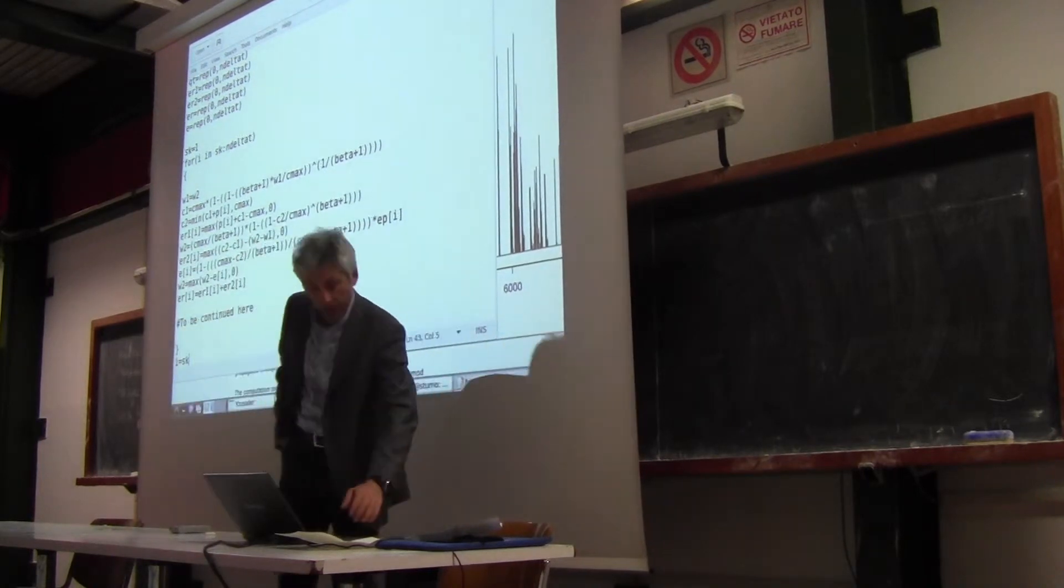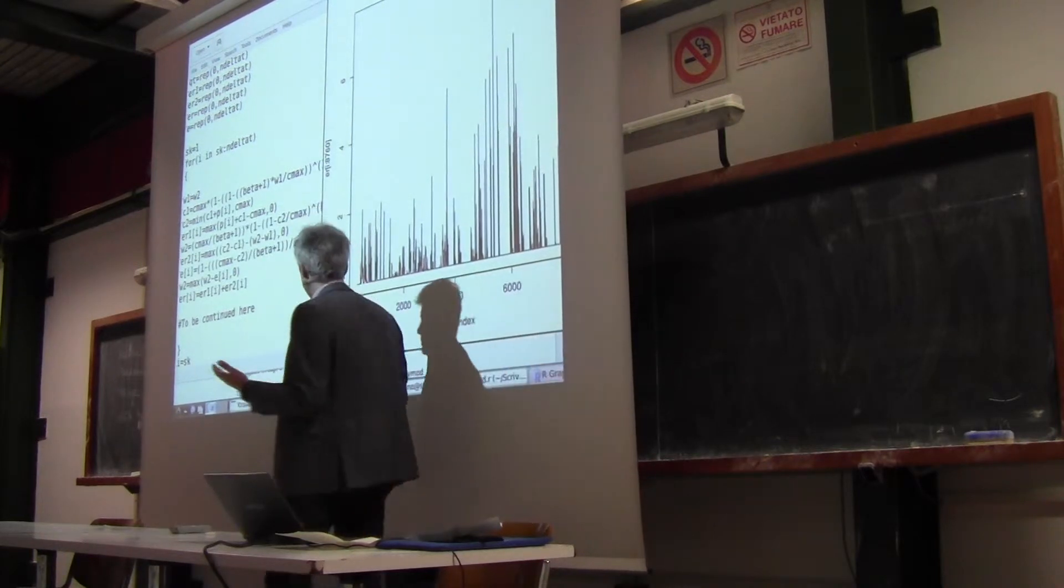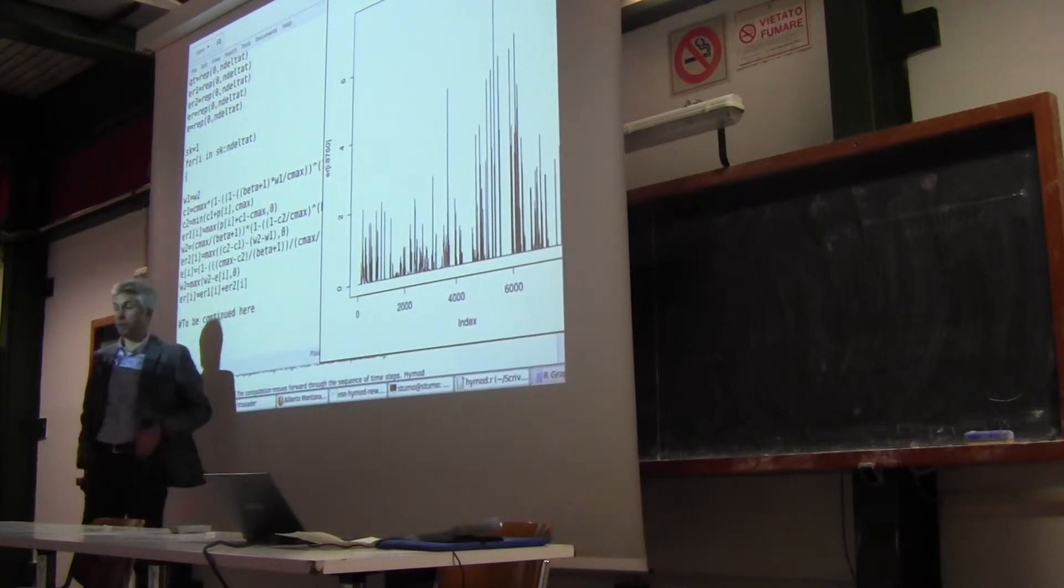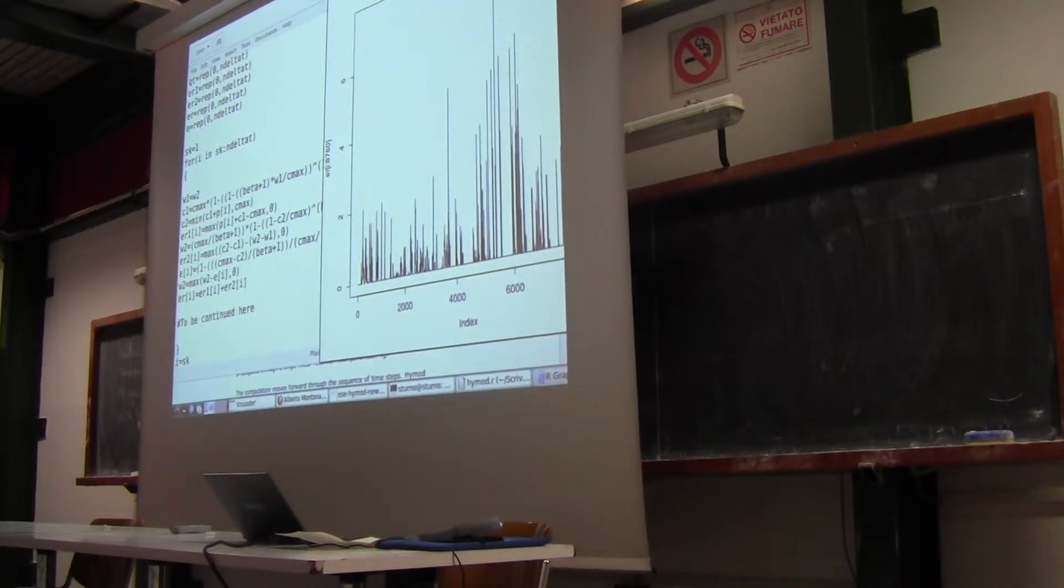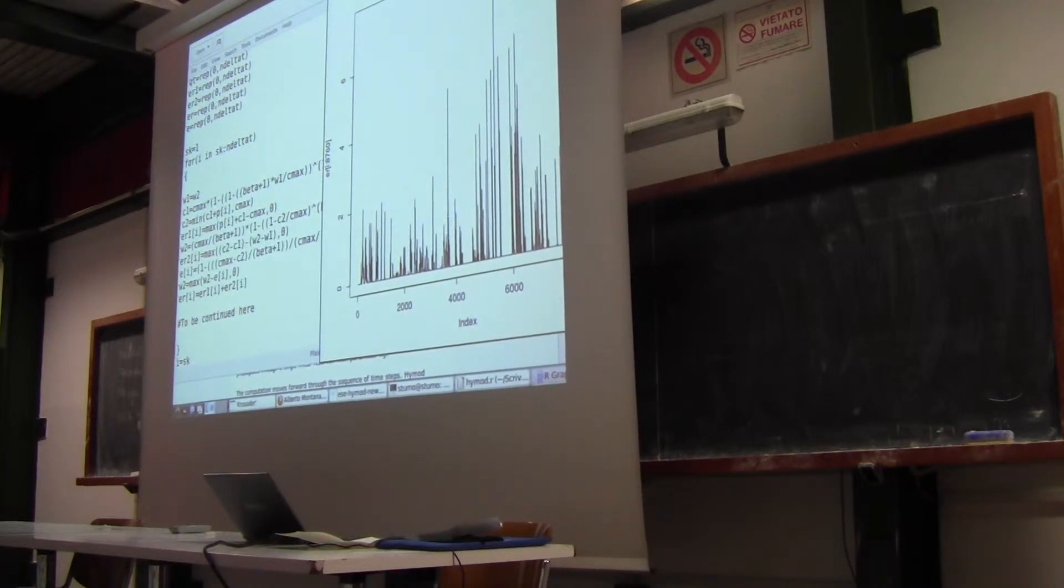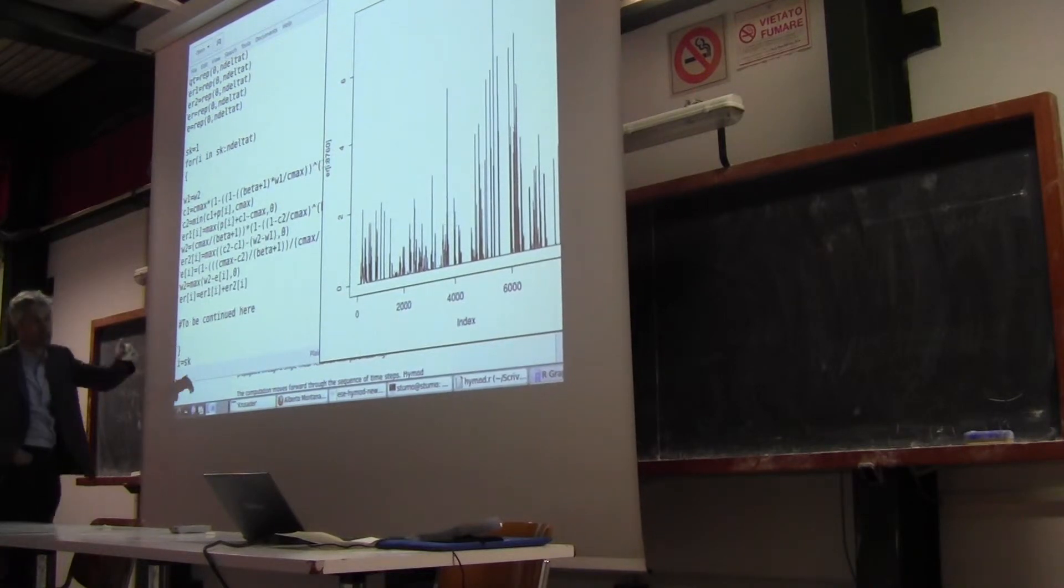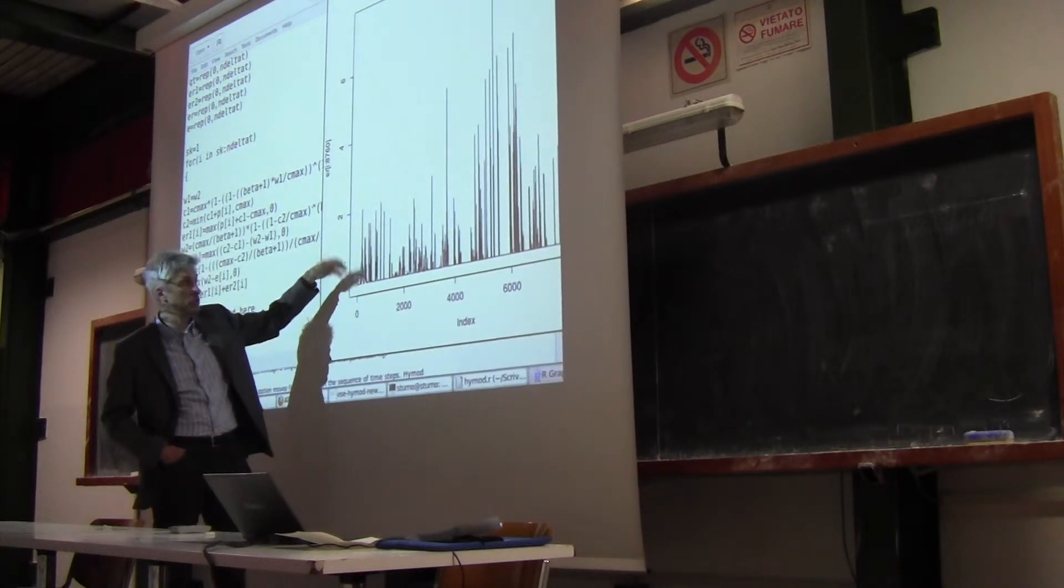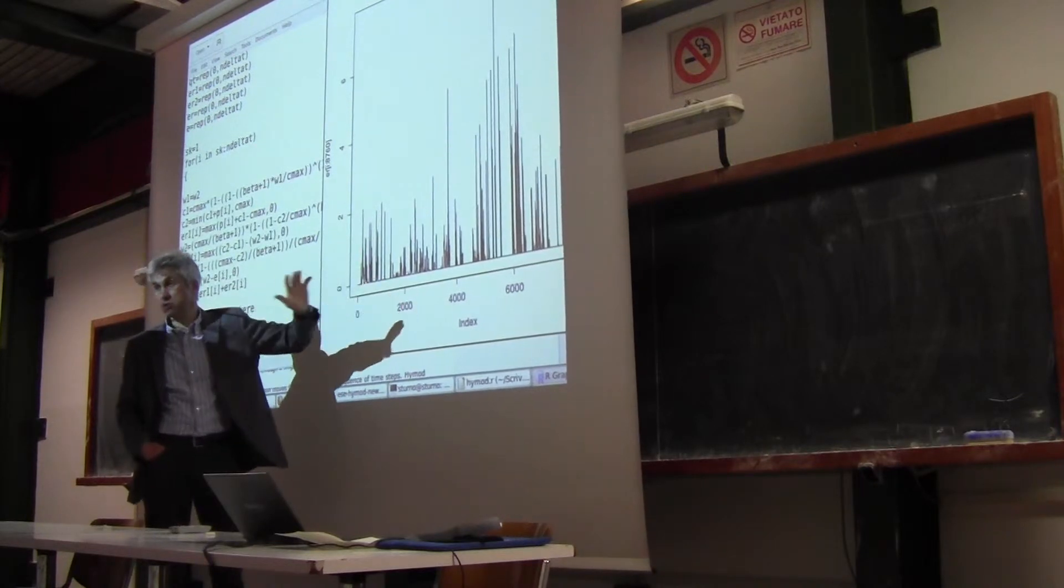And if you look at the output, the output is reasonable. Of course I just put trial values for parameters, but I'm not interested in seeing now the magnitude of the result. I'm just interested in seeing that it runs, and it is reasonable because what you see here is basically something that is clearly related to rainfall. When it rains you have peaks in the runoff production. When it doesn't rain you have zeros, which is fine.